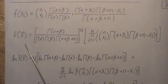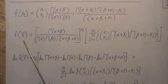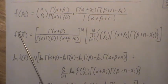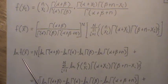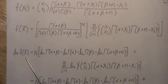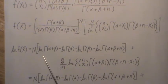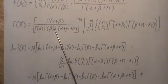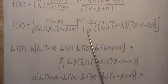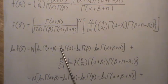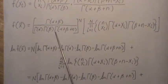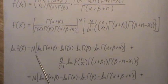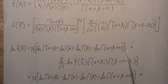Now what we do is take the log likelihood. Maximizing this distribution is going to be equivalent to maximizing the log likelihood, and it's often much easier. If we take the log of this product, it becomes the sum of the logs, and then the log of this division all breaks down into this.